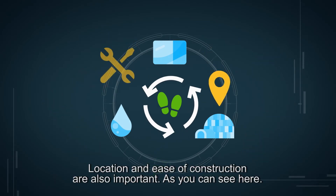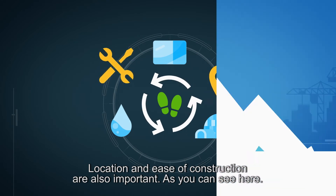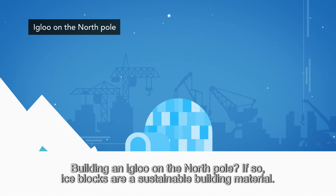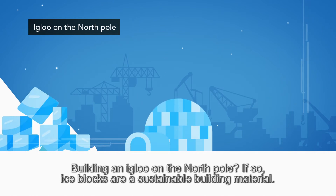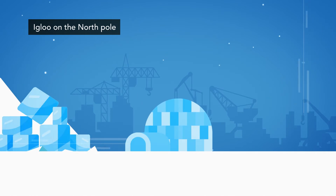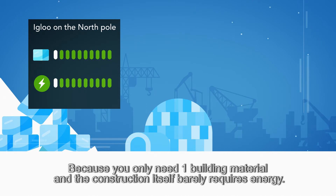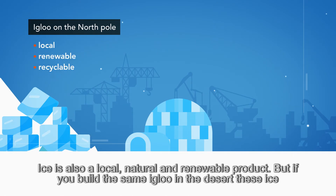Location and ease of construction are also important, as you can see here. Building an igloo on the North Pole? If so, ice blocks are a sustainable building material, because you only need one building material and the construction itself barely requires energy. Ice is also a local, natural and renewable product.